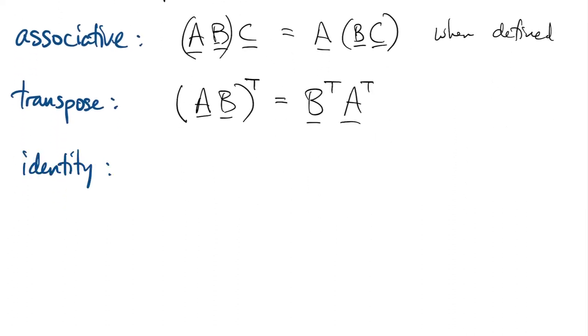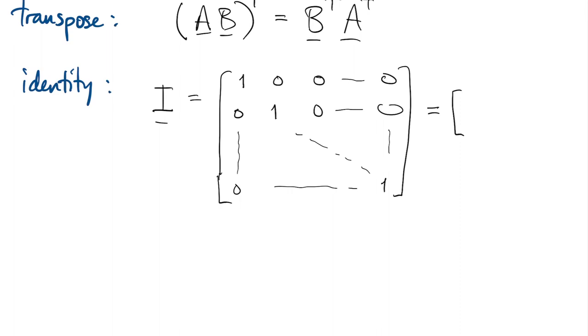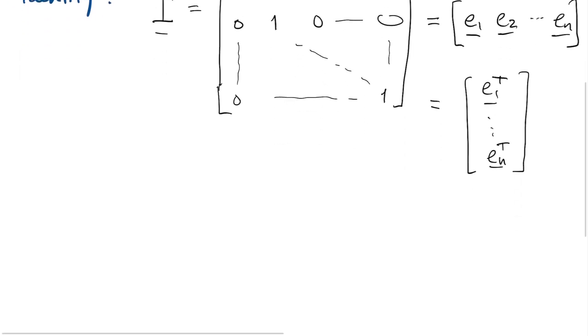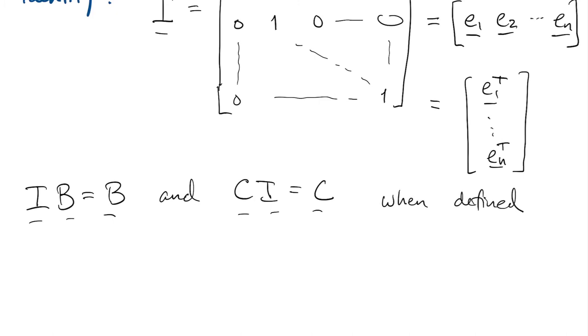There's a very important type of matrix called the identity matrix, which we usually call I. It's a diagonal matrix, so it's zero everywhere except on that main diagonal, where it equals one everywhere. When we write it in terms of its columns, it's traditional to use a lowercase e. So e sub k is the kth column of the identity. When you look at the structure of it, the rows are the same things, transposed into row vectors. The identity matrix has the property that I times B is B, and C times I equals C, whenever the sizes work out so that those products are defined.